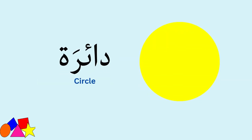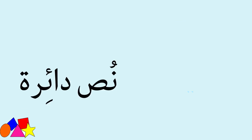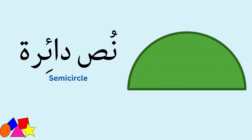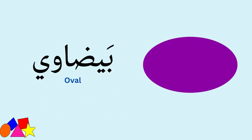Daira (دائرة) — Circle. Nus daira (نص دائرة) — Semicircle. Beydawii (بيضاوي) — Oval.